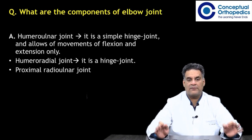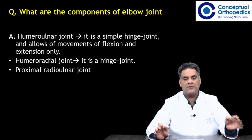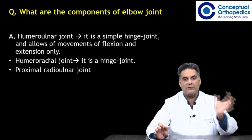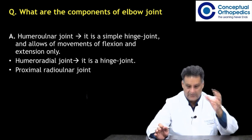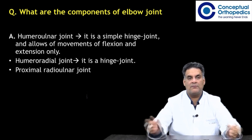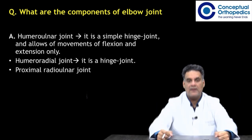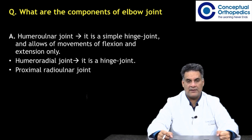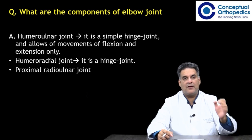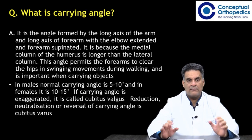What are the components of the elbow joint? The elbow joint is made up of the humero-ulnar joint, which is the major joint and a simple hinge joint allowing flexion and extension; then the humero-radial joint, which is also a hinge joint; and the proximal radio-ulnar joint.